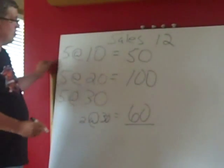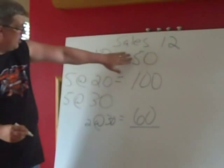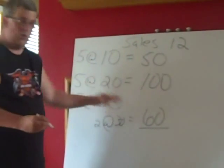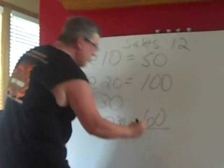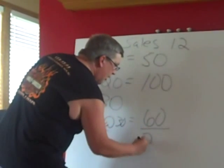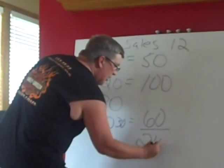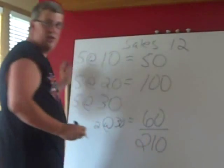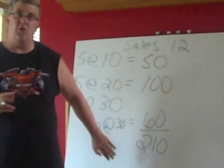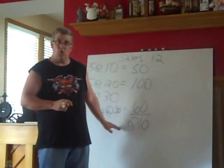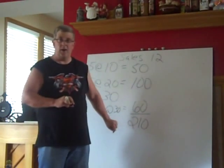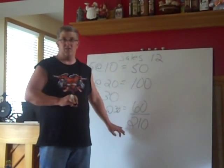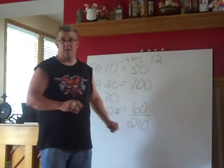So for our cost of goods sold, we add our numbers up: $50 plus $100 plus $60 gives us $210. This is our cost of goods sold, which goes on the income statement as an expense.